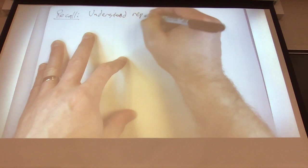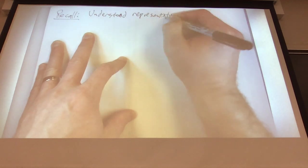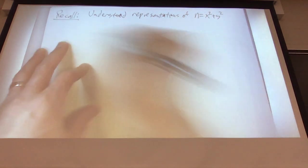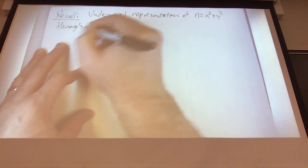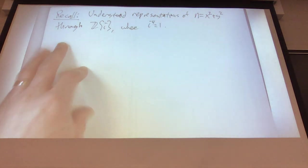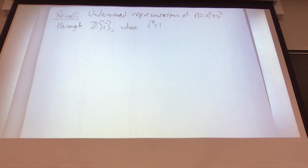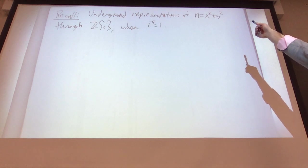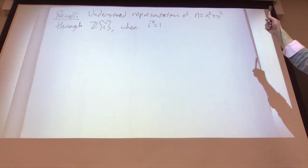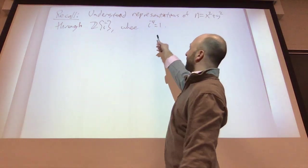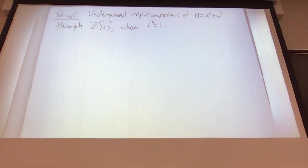We studied representations of n as a sum of two squares through the Gaussian integers, where i to the fourth is one. The way we came to this question about which numbers are sums of two squares came from the Pythagorean question. We very quickly realized we should be working in the Gaussian integers, and what made the Gaussian integers special is that the number i satisfies i to the fourth equals one.